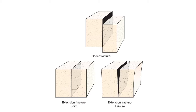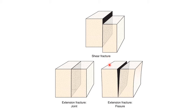Planar discontinuities along which rock loses cohesion during brittle behavior are known as joints — extensional fractures with no component of displacement parallel to the plane. They are known as faults if the rocks on both sides have moved relative to each other parallel to the plane — these are shear fractures. If fractures are filled with secondary crystallization, those fractures are known as veins.